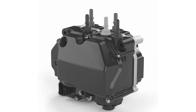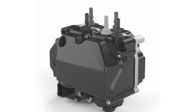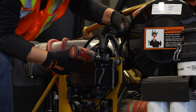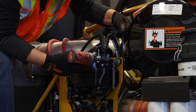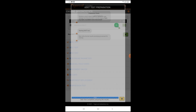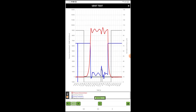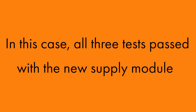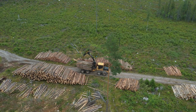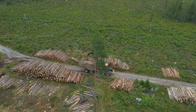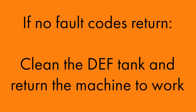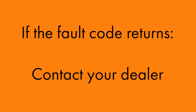The final step is to replace the DEF supply module. Install a new supply module and connect all of the hoses to the DEF sending unit. Run three consecutive UDST tests while watching the clear tubing to make sure there is no air present. In this case, all three tests passed with a new supply module. The operator will now operate the machine for one hour. If no fault codes return after operating the machine, clean the DEF tank and return the machine to work. If the fault code returns after operating, contact your dealer.